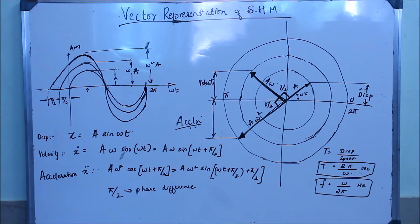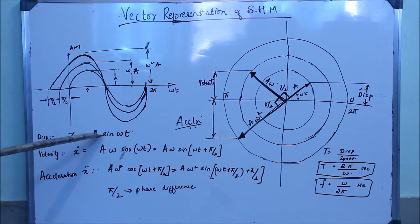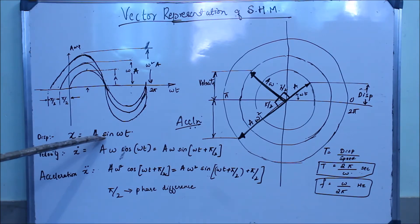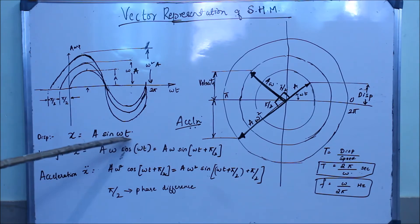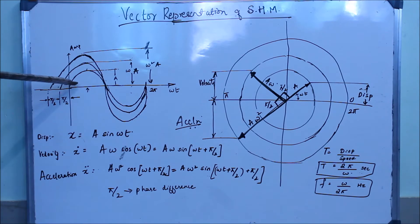Coming to the equations, we know that the displacement equation for simple harmonic motion is x = A sin(ωt), where x is the displacement, A is the amplitude of the wave or curve, ω is the angular velocity or circular frequency, and t is the time period represented in the first curve.